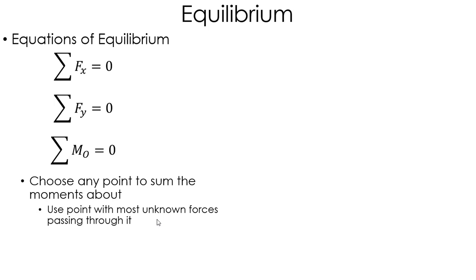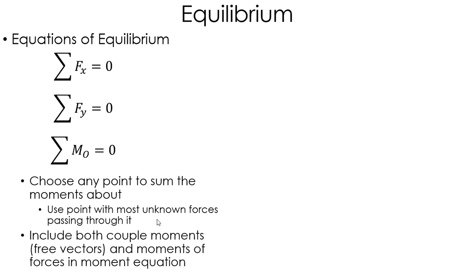So again, choose a point. You can choose any point you want. You're never going to be wrong. But if you choose it correctly, you can make the math a lot easier, and you choose a point with the most unknowns passing through it. Another thing is remember to include both couple moments and moments due to forces in that moment equation. And remember, couple moments, the location doesn't matter. It's a free vector, so I just add it in there, not worrying about where the location of it is. Force, moments due to forces, it very much does matter its location. So you'll take an R cross after that.